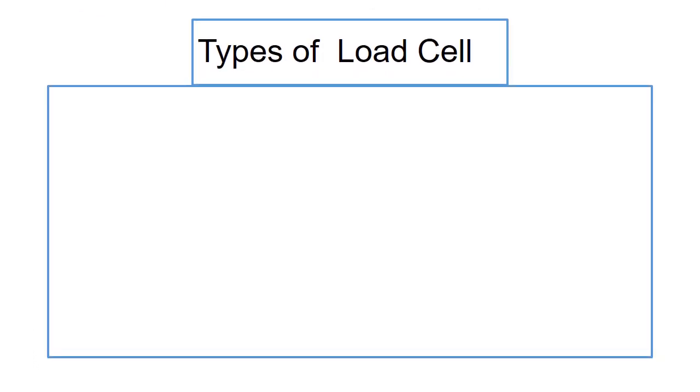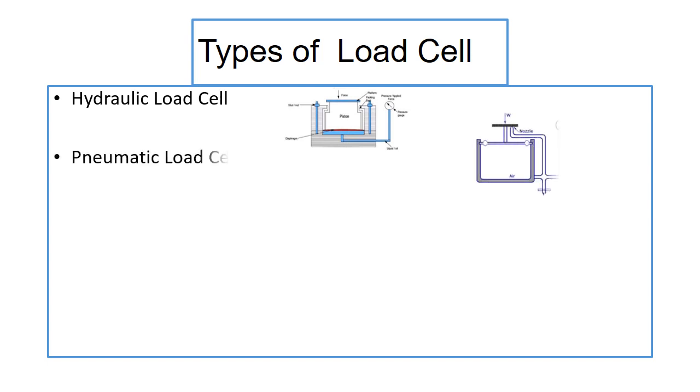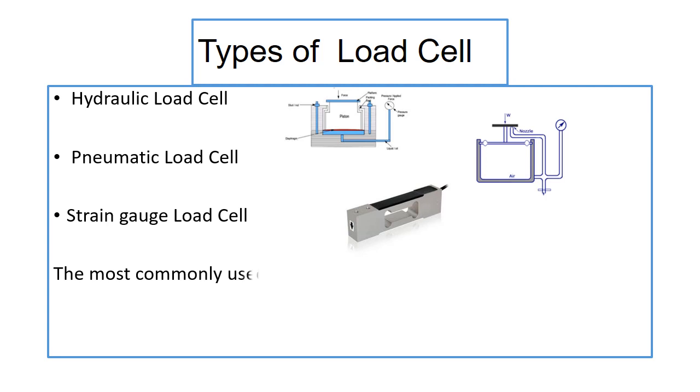Types of load cells: There are three types of load cells available - hydraulic load cell, pneumatic load cell, and strain gauge load cell. The most commonly used type of load cell in industrial applications is the strain gauge load cell.